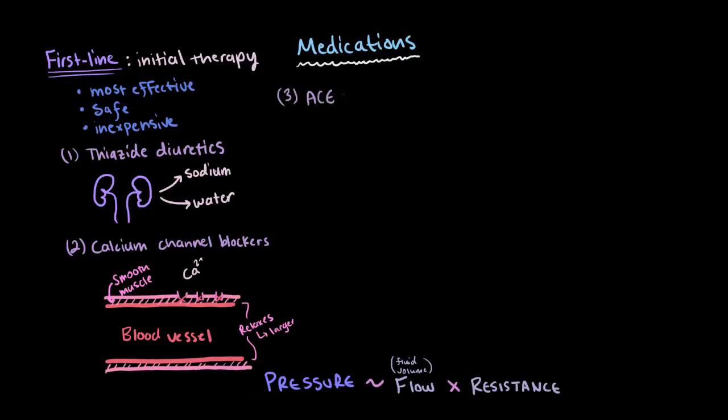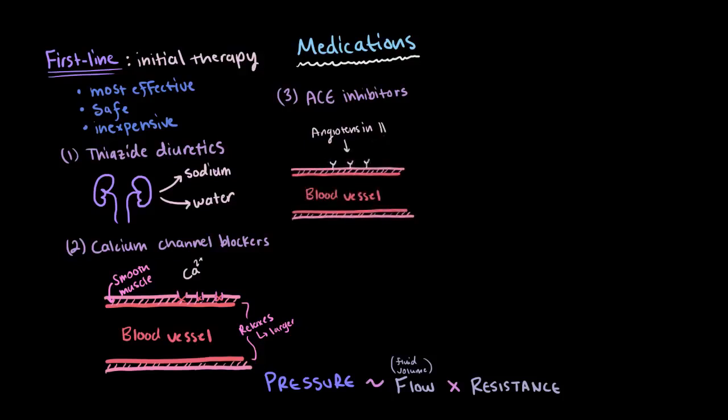There's also ACE inhibitors, which prevent the renin-angiotensin-aldosterone system from taking effect. Basically, these inhibitors block the formation of angiotensin II, which is a vasoconstrictor. Since vasoconstrictors constrict your blood vessels, this will end up widening the blood vessels and reduce their resistance, reducing blood pressure.